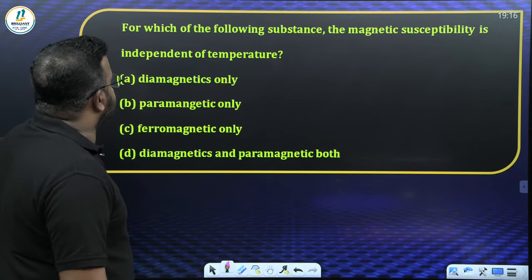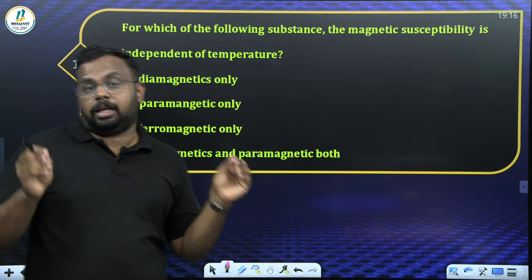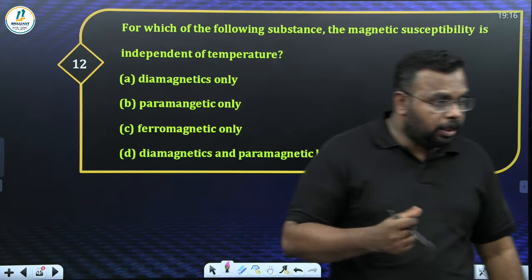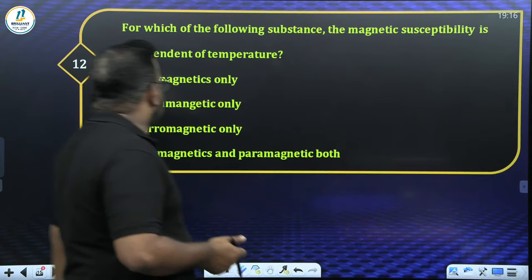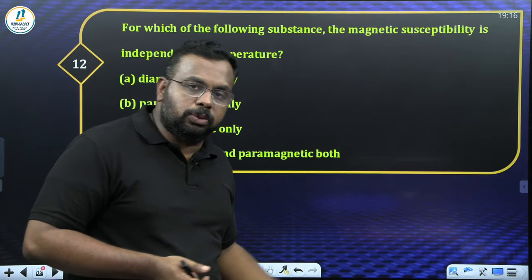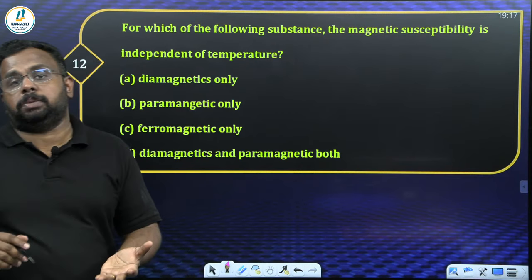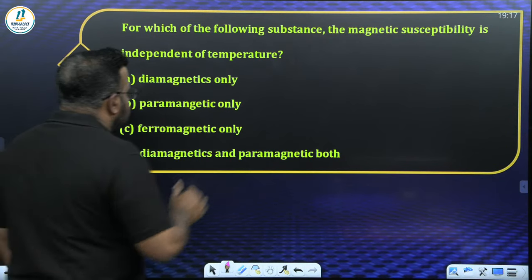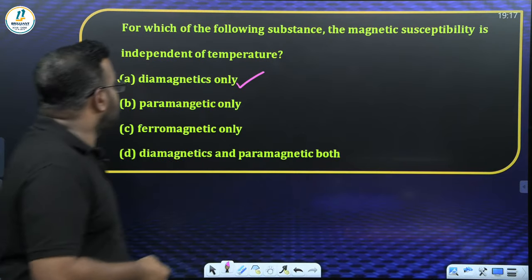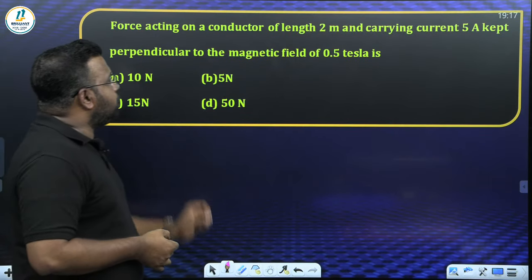Question 12: For which substance is the magnetic susceptibility independent of temperature? For paramagnetic and ferromagnetic substances susceptibility is inversely proportional to temperature. For diamagnetic substances, susceptibility is independent of temperature. Answer: diamagnetic.